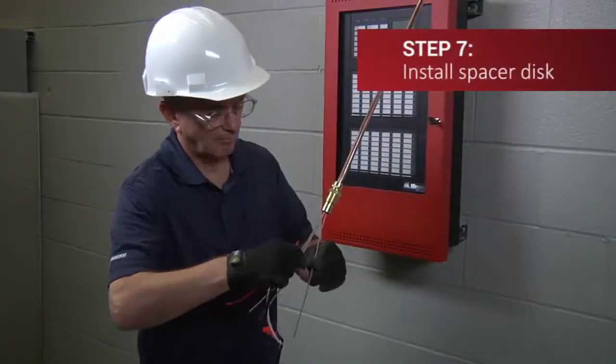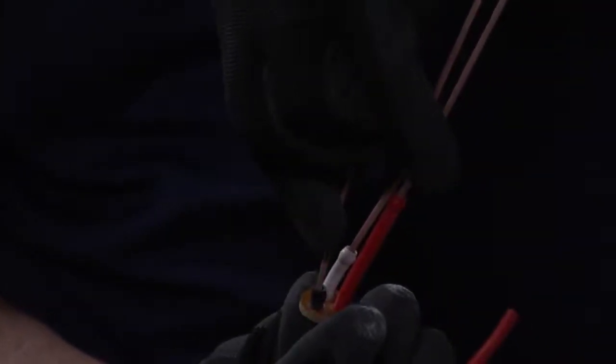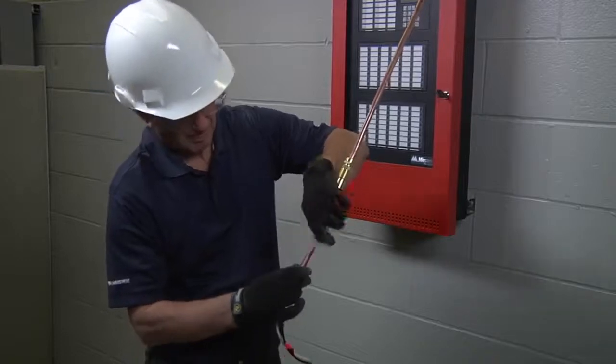Now ensure that all conductors are straight and slide the spacer disc and insulating sleeve subassembly over the conductors, anchoring bead end first.